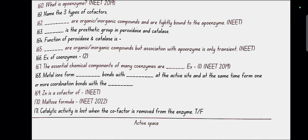Maltose formula: C12H22O11. Catalytic activity is lost when cofactor is removed from the enzyme. Yes, true.